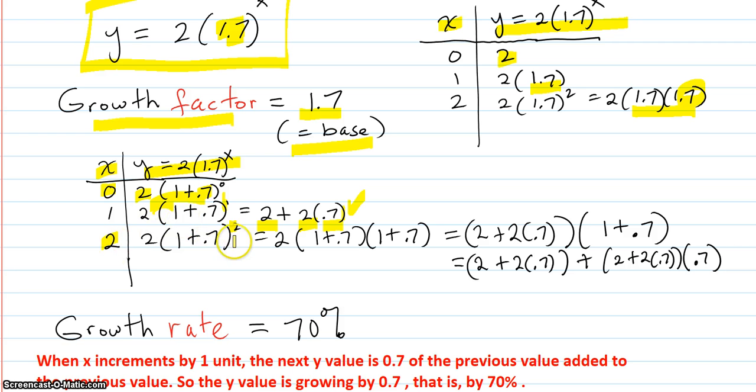When you have x equals 2, you have two factors of this. Here's the first, here's the second. If you just multiply the 2 in on the first one, you're going to have 2 plus 2 times .7. That is the previous value right here. The previous value. And the 1 plus .7 is copied down right here. So it's the previous value times 1 plus .7.